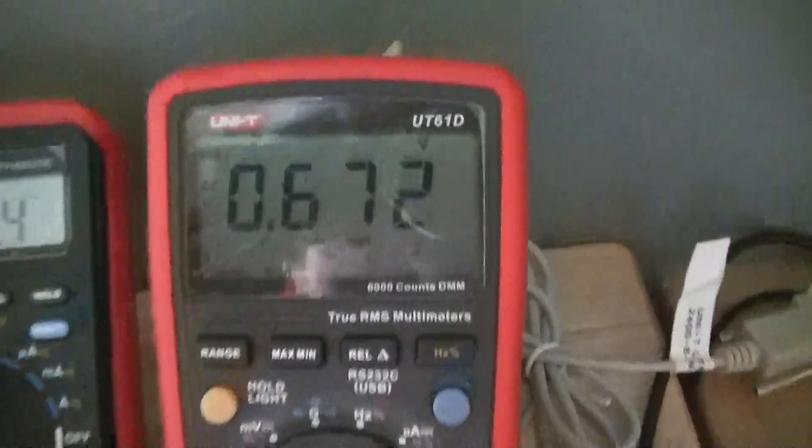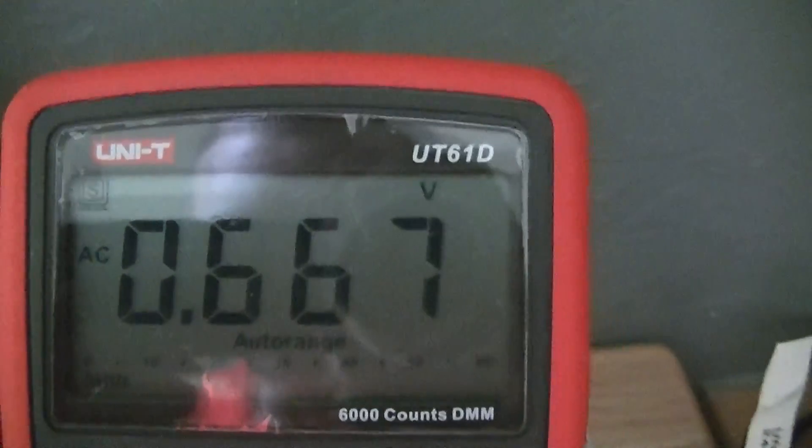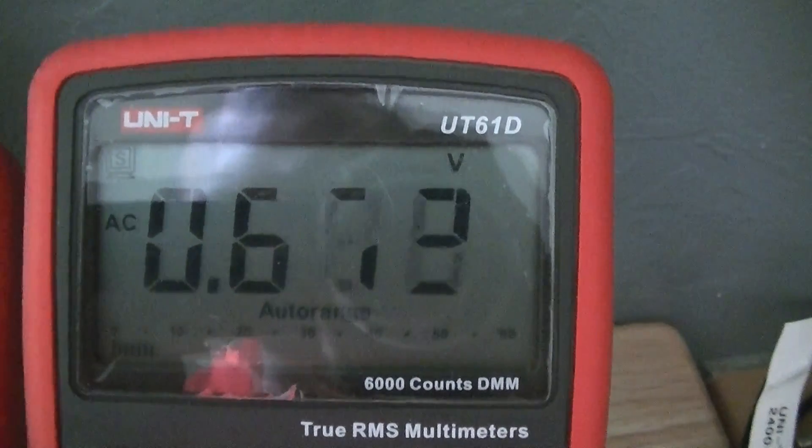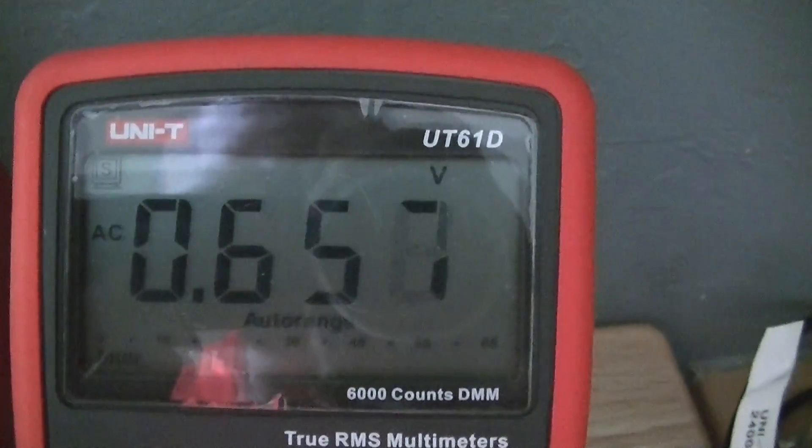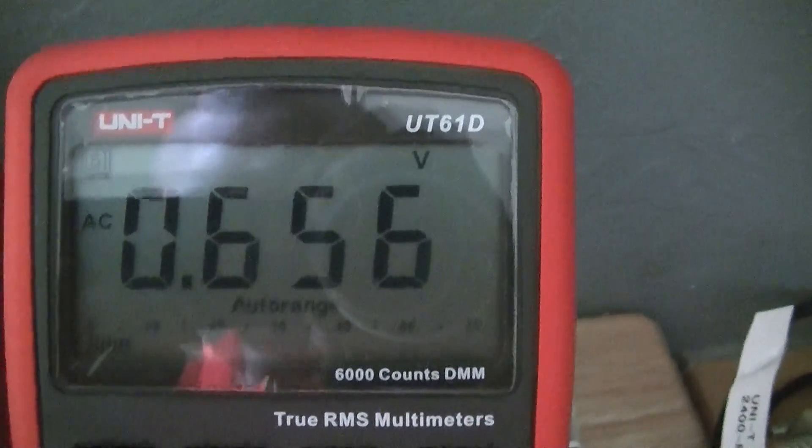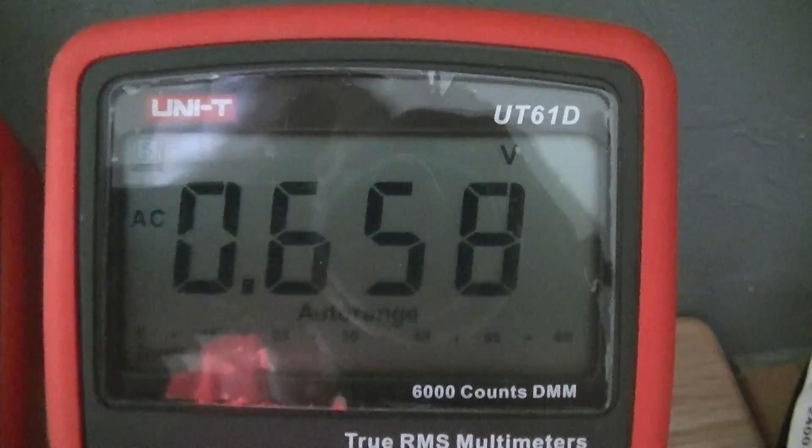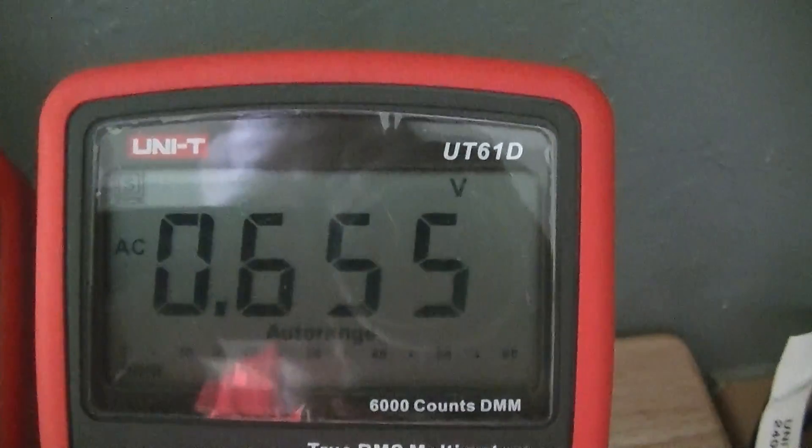As you can see, we currently have 0.66 volts AC on the electrical grounding system right now. And they say anything over 0.5 is a biological hazard. It's been very extensively researched for decades in the dairy industry because it makes dairy farmers, their families, and their animals very sick.